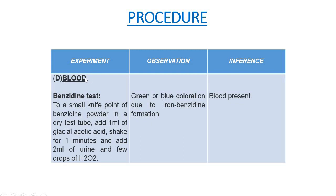The next test is for the presence of blood in the urine, and we perform the benzidine test. To a small knife-point of benzidine powder in a dry test tube, we add 1 ml of glacial acetic acid, shake it for 1 minute, then add 2 ml of urine and a few drops of hydrogen peroxide. We observe a green or blue coloration due to the formation of iron-benzidine compound, which shows the presence of blood in the urine sample.